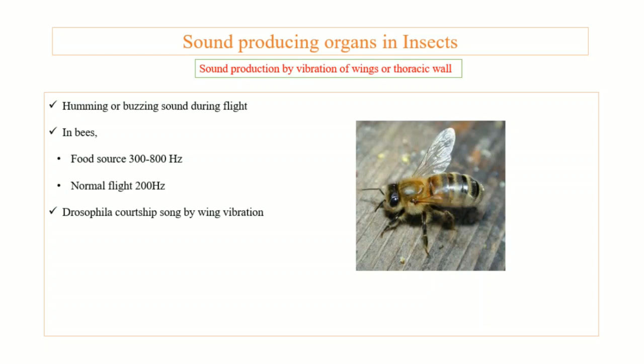Next is sound production by vibration of wings or the thoracic wall. In Drosophila, vibration of the wings produces sound. We call it humming or buzzing. Bees produce sound at 300 to 800 hertz by vibrating their wings when locating a food source, while normal flight produces sound at around 200 hertz.